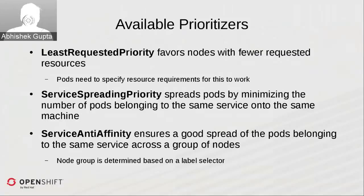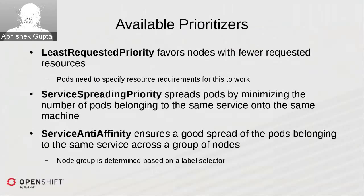Taking this concept further, Service Anti-Affinity ensures a good spread of pods belonging to the same service across a certain group of nodes. While service spreading spreads across all nodes, service anti-affinity identifies individual groups of nodes and spreads pods among different groups as identified by label selectors. We'll cover this in detail when discussing HA.